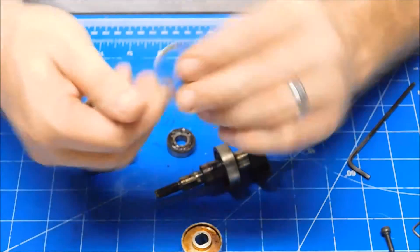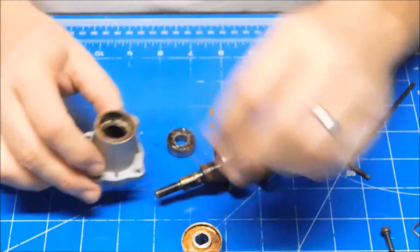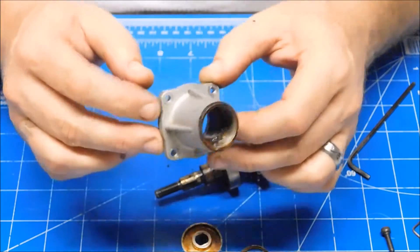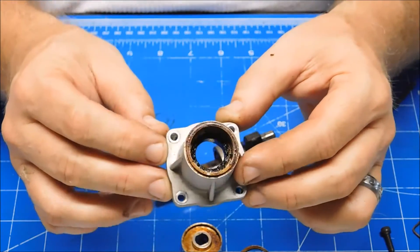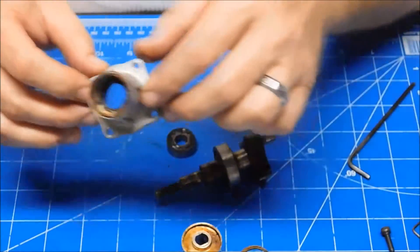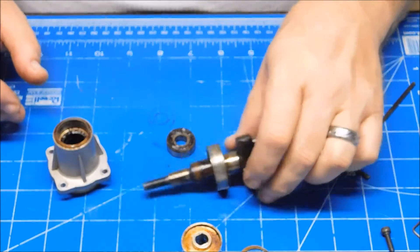Now, obviously, there was this C-clip in here that retained it that I had to pull out first, but I mean, geez, look at the front of this housing. That's just frickin' nasty.